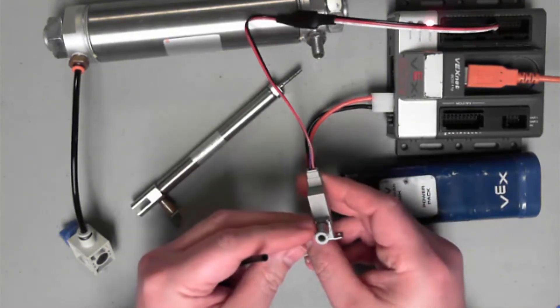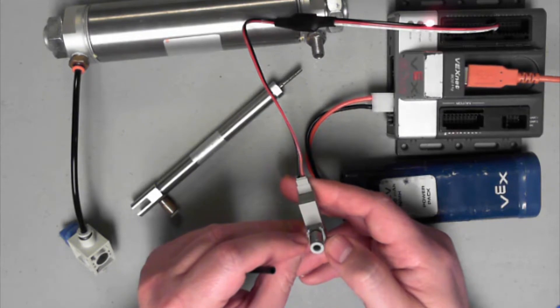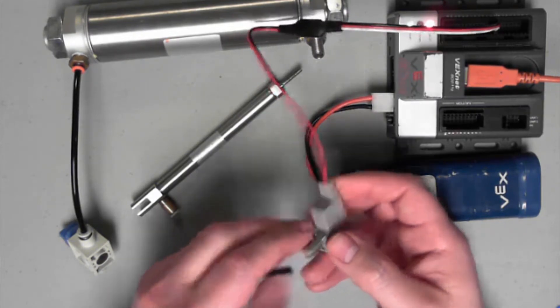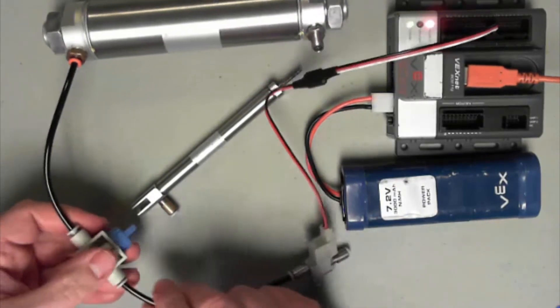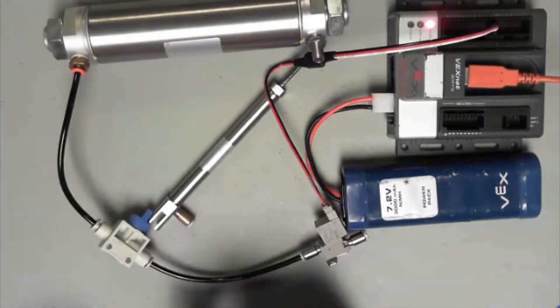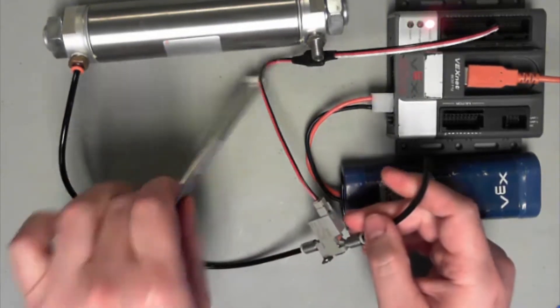So we've got to make sure we're on the right side, and remember this side says P and R for pressure and our release. So I'm going to apply pressure directly to our shutoff valve, and then I'll apply A over to our cylinder.